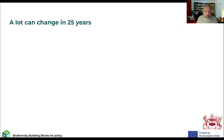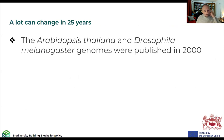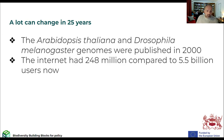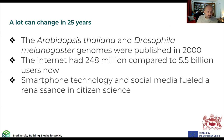What has happened over the past 25 years? Twenty-five years ago we had the first genome of a plant and the first genome of an insect, published in 2000. Now, making genomes of organisms is relatively commonplace. We have the internet, which in 2000 had about 250 million users — we now have five and a half billion users. And with smartphone technology and social media, there has been a complete renaissance in citizen science, generating millions of records on biodiversity.